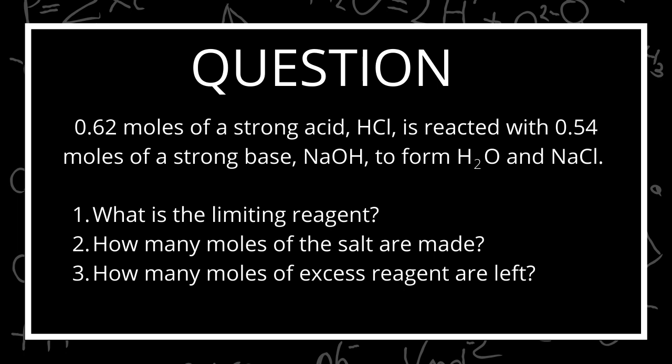The question reads that 0.62 moles of a strong acid, HCl, is reacted with 0.54 moles of a strong base, NaOH, to form H2O and NaCl. What is the limiting reagent? How many moles of the salt are made? How many moles of the excess reagent are left?